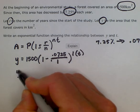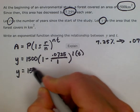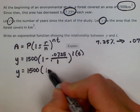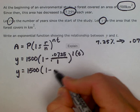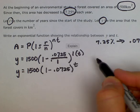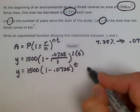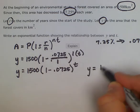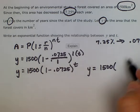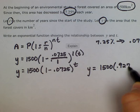y is equal to 1500 times (1 minus 0.0725) all raised to the t. Which then simplified is going to be in our final answer. y is equal to 1500 times 0.9275 raised to the t.